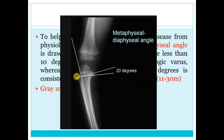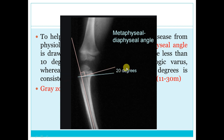X-ray is used to detect the metaphyseal-diaphyseal angle. The metaphyseal line connects the flares of the metaphysis; the diaphyseal line is perpendicular to the shaft. In a normal bone, these are perpendicular to each other. If there is an angle — open medially — this indicates varus deformity. A metaphyseal-diaphyseal angle of less than 10 degrees is mostly physiological; more than 16 degrees is mostly pathological; in between requires follow-up.